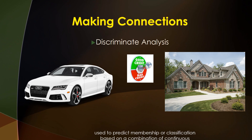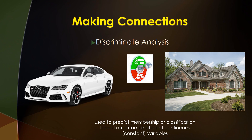Remember, discriminant analysis is used to predict membership based on a combination of continuous factors. So your membership or classification in this example would be whether or not you would be approved for the home or the car, or whether or not you would not be approved. The continuous variables are your salary, your years of experience on the job, your age, and your debt-to-income ratio — all factors that contribute to either a good or bad credit score.